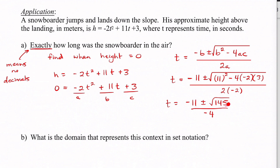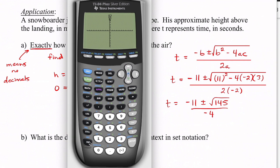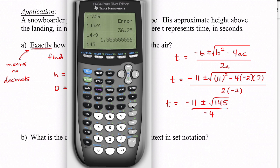Now I want to try to simplify the radical. Divide 145 by perfect squares — 4 gives a decimal, 9 gives a decimal, 16 gives a decimal — so we can't simplify square root of 145. You can keep trying 25, 36, 49, and none of them work. So the next thing is to interpret our answer. I'll type this into my calculator — once using the plus and once using the minus — to see what type of answers I get.